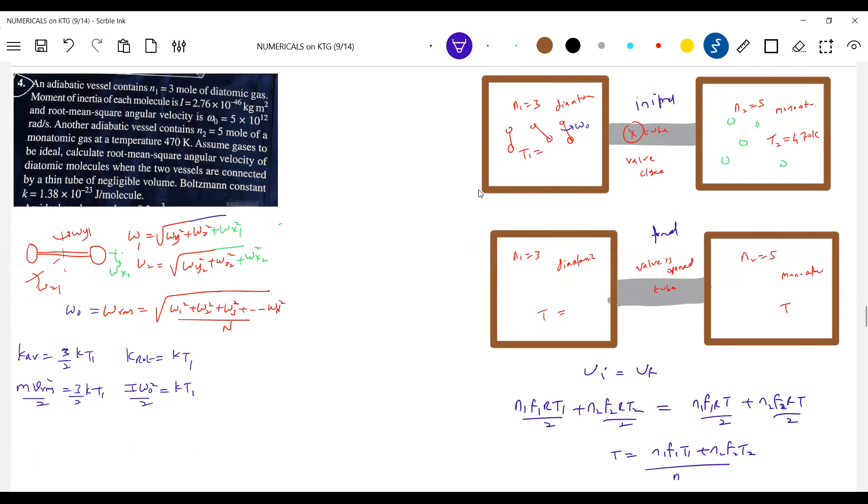The gas will exchange energy and it will attain thermal equilibrium. Now you know T1. How to get T1? From the initial discussion we made. Moment of inertia is also given, everything. We know moment of inertia I and also the omega naught. With that we'll get the temperature T1. That I'm going to substitute. What is f1? Monatomic gas, 3. What is f1? f1 is 5. f2 is 3. n1 is 3. T1 is what you're going to calculate from here. After getting this, he's asking now.